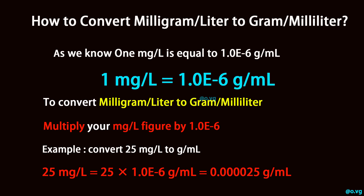Example: convert 25 milligram per liter to gram per milliliter. 25 milligram per liter equals 25 times 1.0e-6 gram per milliliter, which equals 0.000025 gram per milliliter.